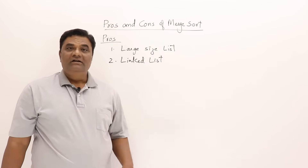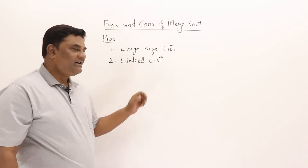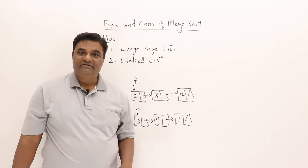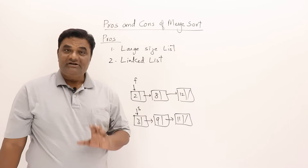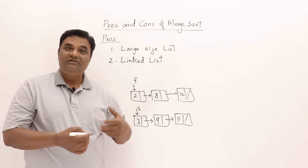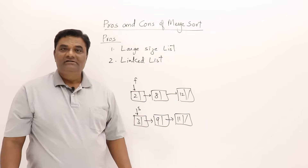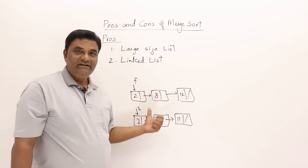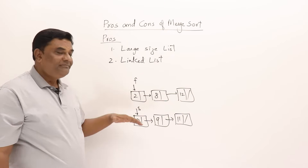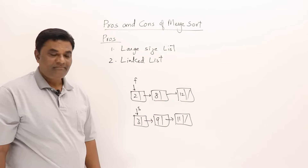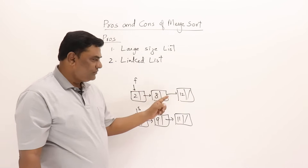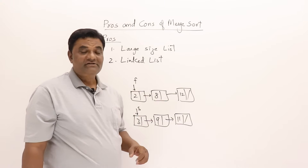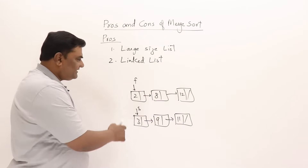Merge sort is suitable for linked lists. Merge sort uses merging, so if we understand merging on linked lists, merge sort works similarly. If I have two sorted linked lists, I can merge them without creating a third linked list — I can just link the nodes and form a single linked list.